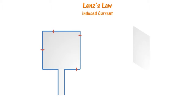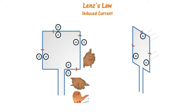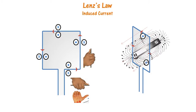Here we have a current-carrying loop with current in the anticlockwise direction. Using the right-hand thumb rule, the current within the loop creates a magnetic field pointing outwards from the paper, and outside the loop it points inwards. Viewed from a different direction, the field lines come outside and loop around — just like a bar magnet. So a current-carrying loop behaves like a magnet.